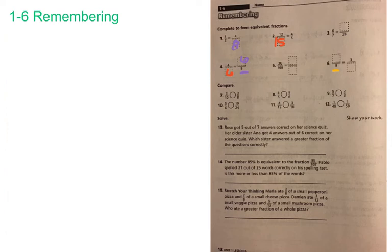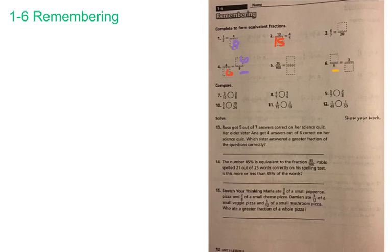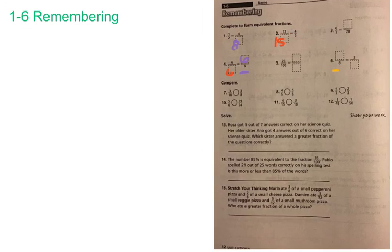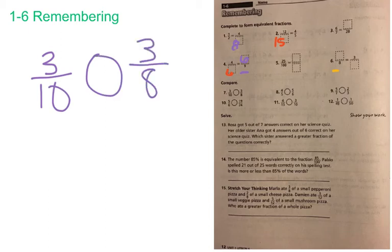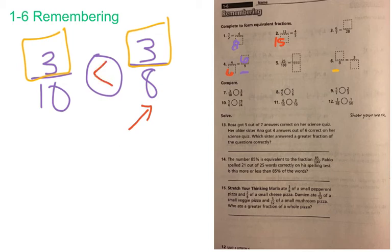We're going to do a review of comparing fractions — that's numbers 7 through 12. Remember, there are multiple methods: you can cross-multiply the denominators by the numerator, or multiply the denominators by each other. If the fractions have the same numerator, as in number 12, you're looking for the one with the smaller denominator — that's always going to be the bigger fraction. For number 7, we're comparing three-tenths to three-eighths. Since the numerators are the same, the smaller denominator tells us three-eighths is larger than three-tenths.